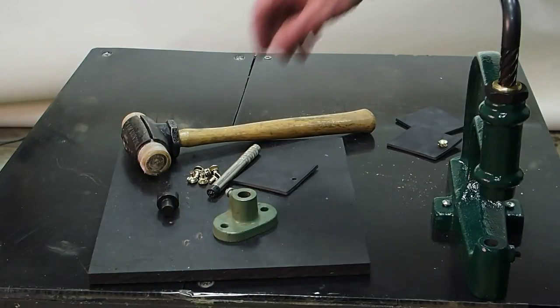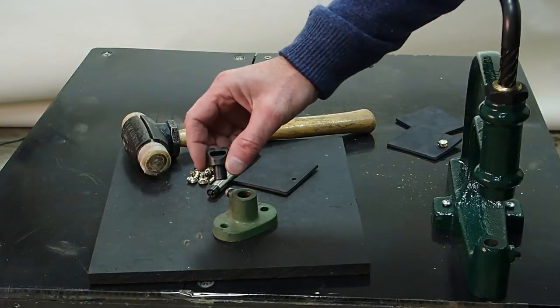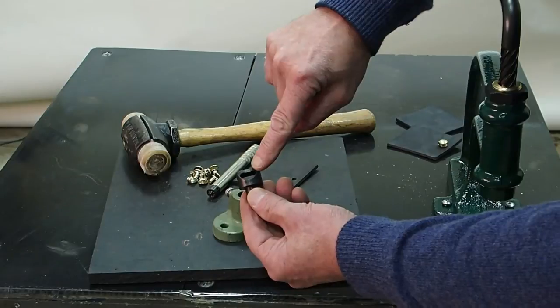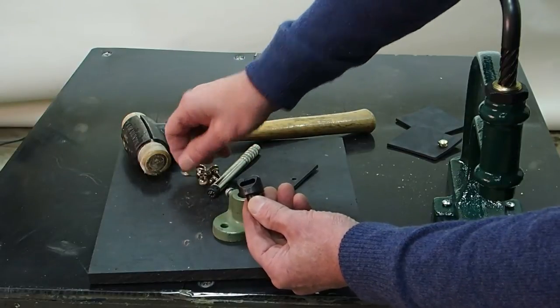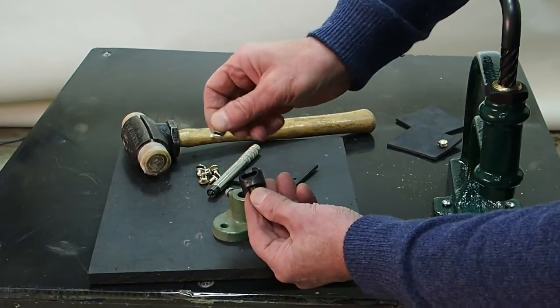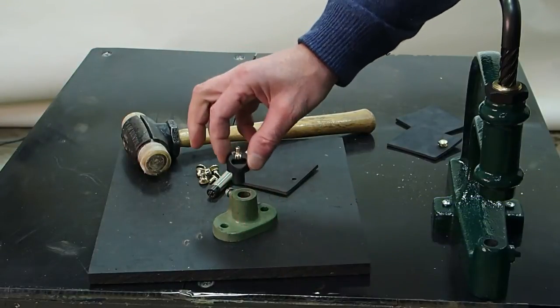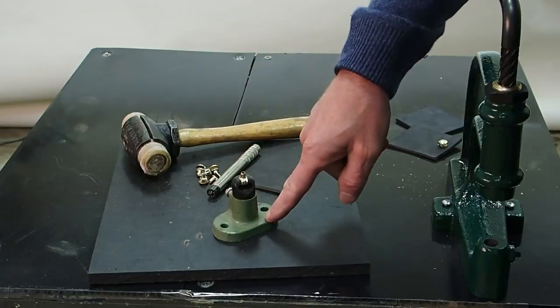What you'll need to set a boot hook is a boot hook die set. This is the bottom die. It's got a cavity here where you would insert your boot hook so that the hook part doesn't get smashed, and you would put it into a bottom die holder.